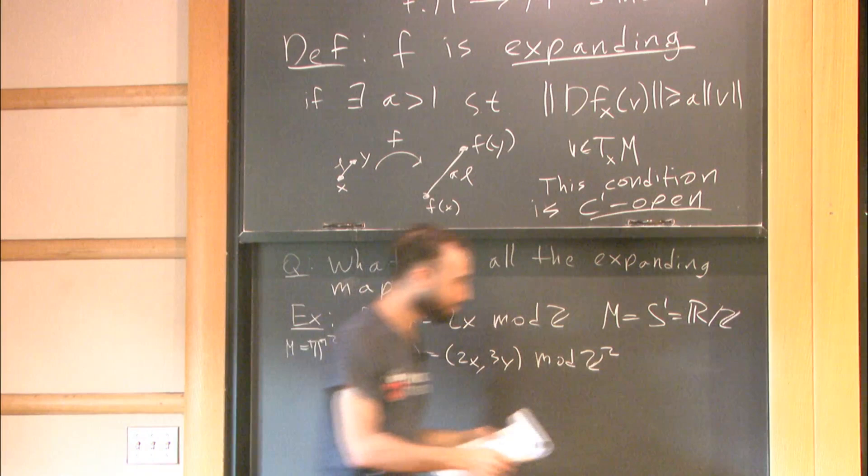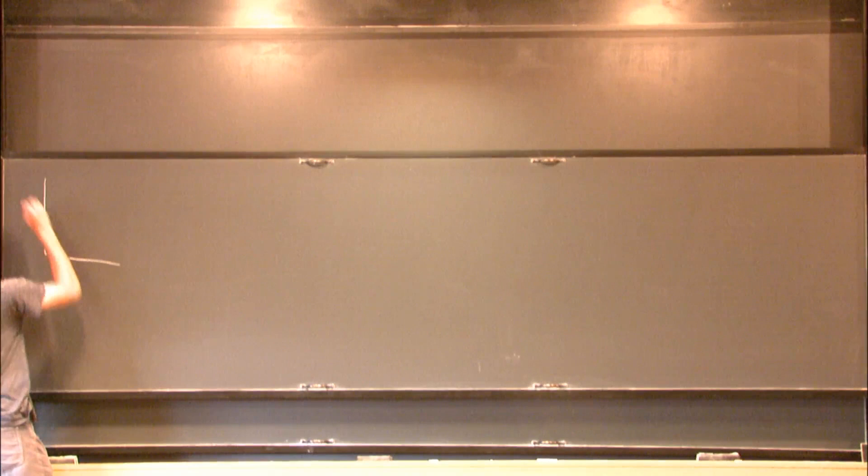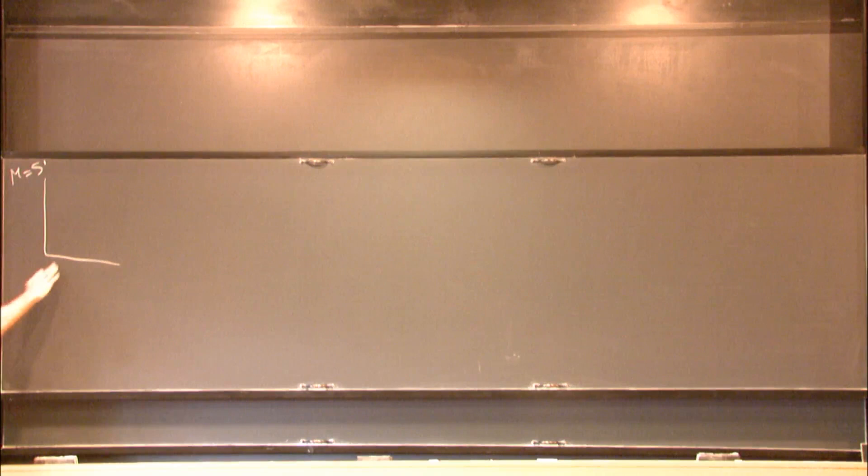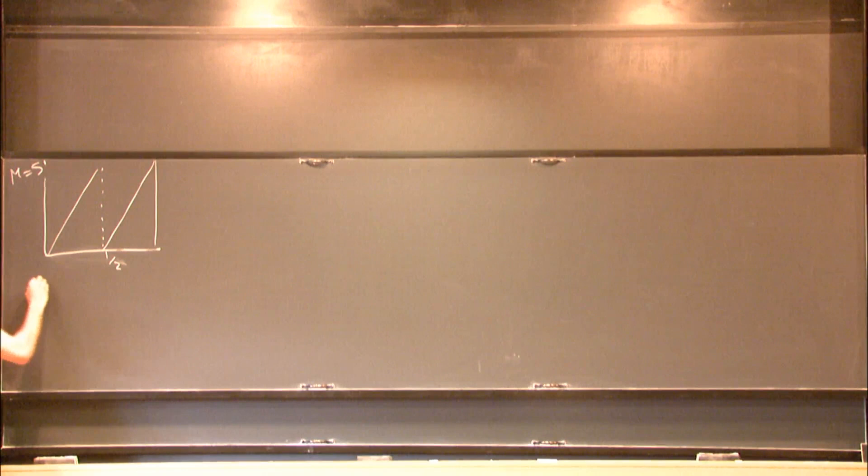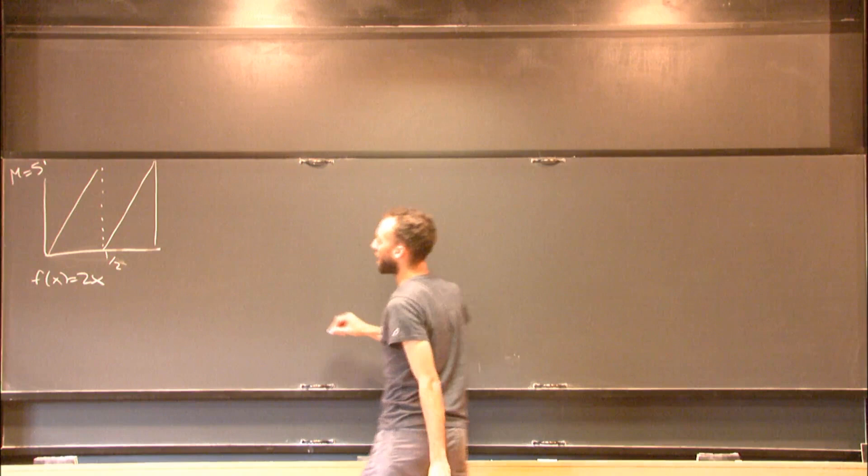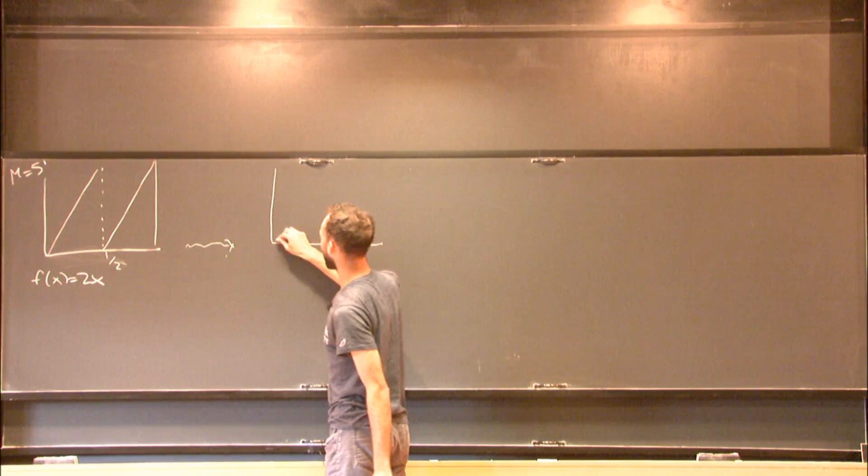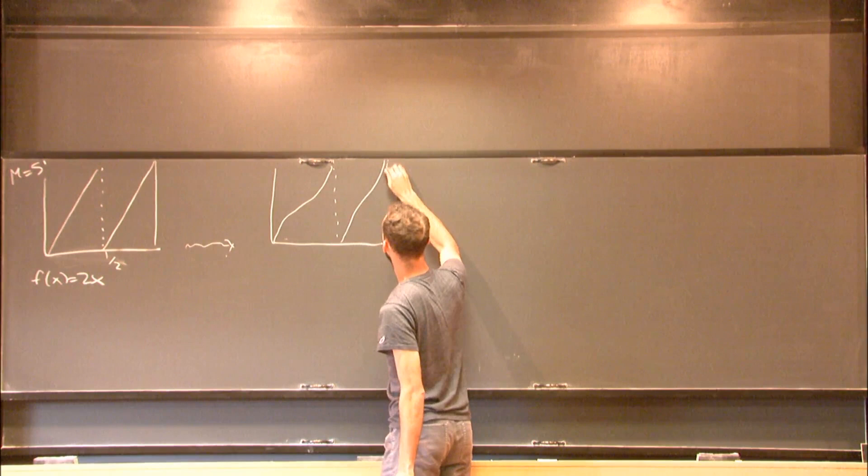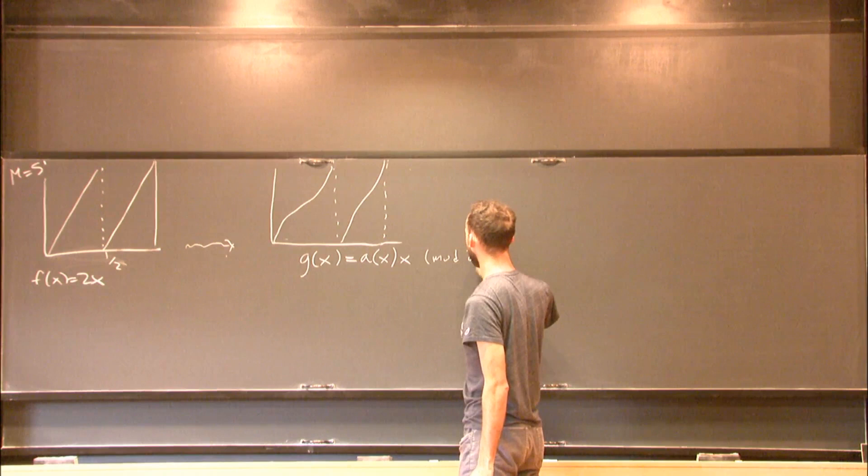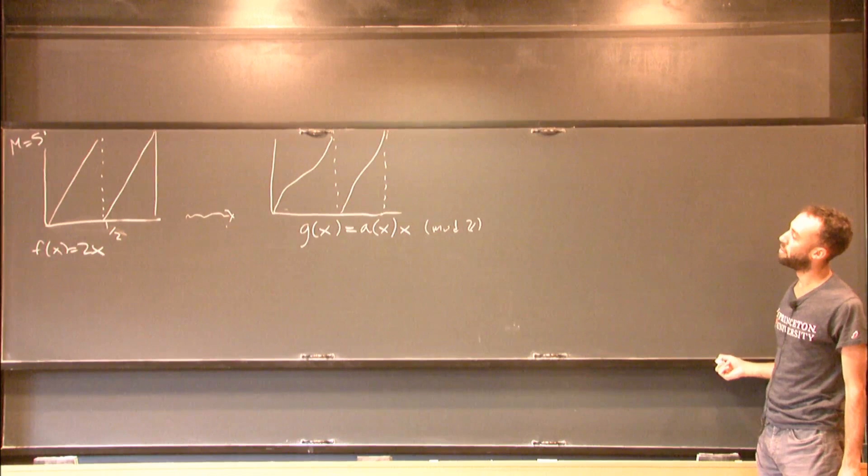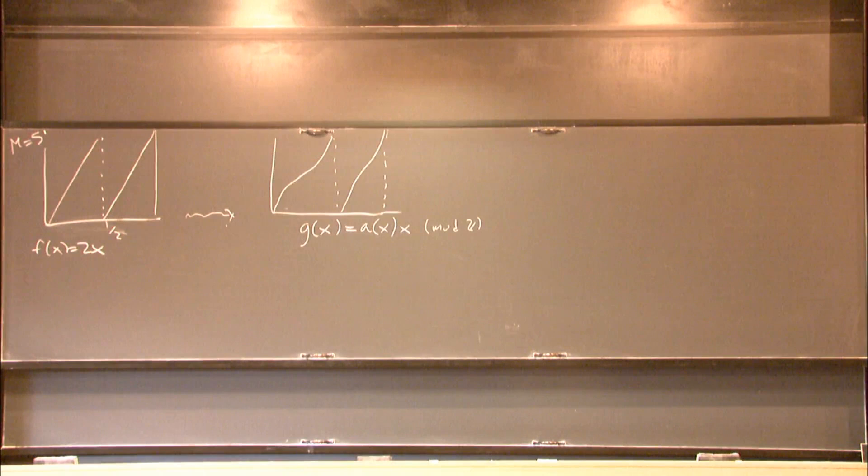So if I take any of these examples and perturb them a little bit, if I take any of these examples of f of x equals 2x, I could perturb, make another picture, and this is some g of x equals a of x. Maybe I write it like a of x times x mod ℤ, or something like that, where a of x is pretty close to 2. And this will also be expanding.